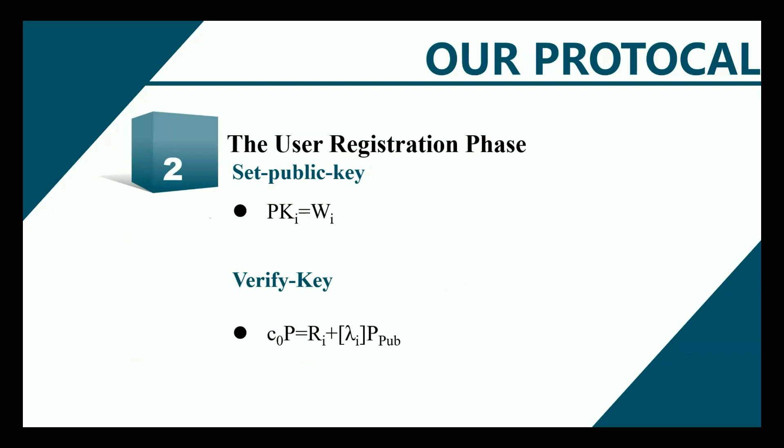The public key PK_i is set equal to W_i, which is kept public and considered as the public key of the user. The user then computes C0 and lambda_i and confirms the equation: if C0·P equals R_i plus lambda_i multiplied by P_pub. The private key is valid if the equation holds, and the user U_i stores the value in mobile device 1.